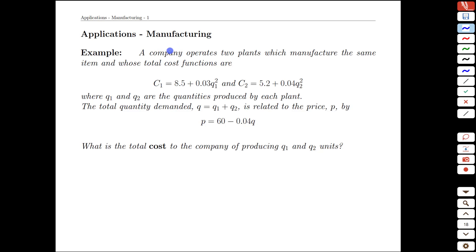In this video we're going to look at another application of optimization. The scenario is that a company operates two plants and the cost of each plant is given here. The cost has a fixed cost and also an element that depends on how much is produced at that plant. There is a total demand which is related to the price.